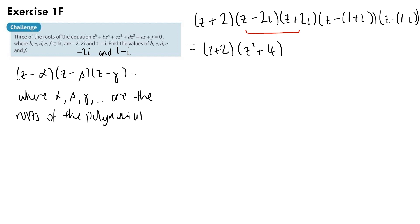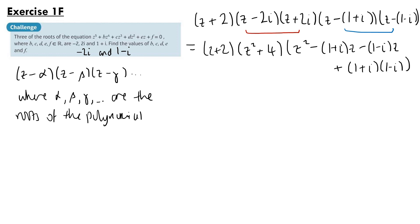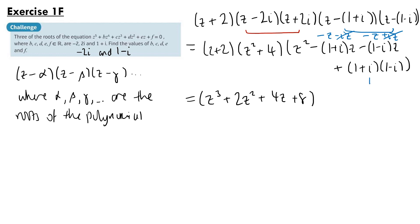Looking at the last two brackets, we have z squared, then minus (1 plus i)z minus (1 minus i)z, and then plus (1 plus i)(1 minus i) at the end. The iz terms cancel, and the final product is a difference of two squares: 1 squared minus i squared equals 1 plus 1 equals 2. So the second bracket simplifies to z squared minus 2z plus 2.